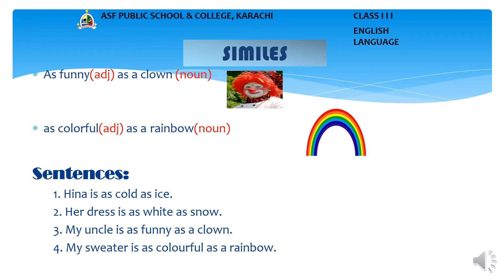Now we will learn how to use similes with 'as' in sentences. Sentence 1: Hina is as cold as ice. Sentence 2: Her dress is as white as snow. Sentence 3: My uncle is as funny as a clown. Sentence 4: My sweater is as colorful as a rainbow.